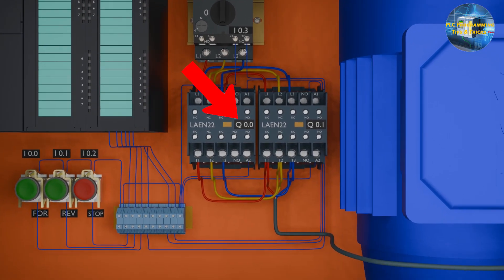The first contactor is used to run the motor in the forward direction; its coil is wired at Q0.0 output of the PLC. The second contactor is used to run the motor in the reverse direction; its coil is wired at Q0.1 output of the PLC.